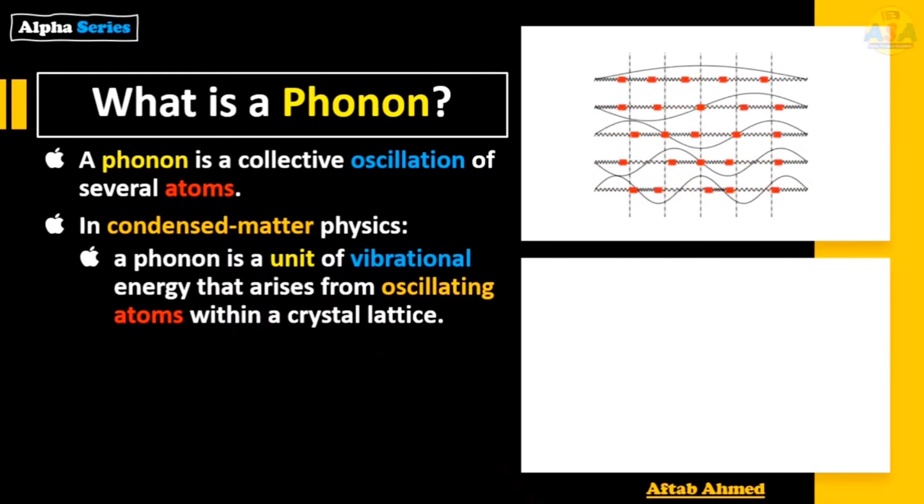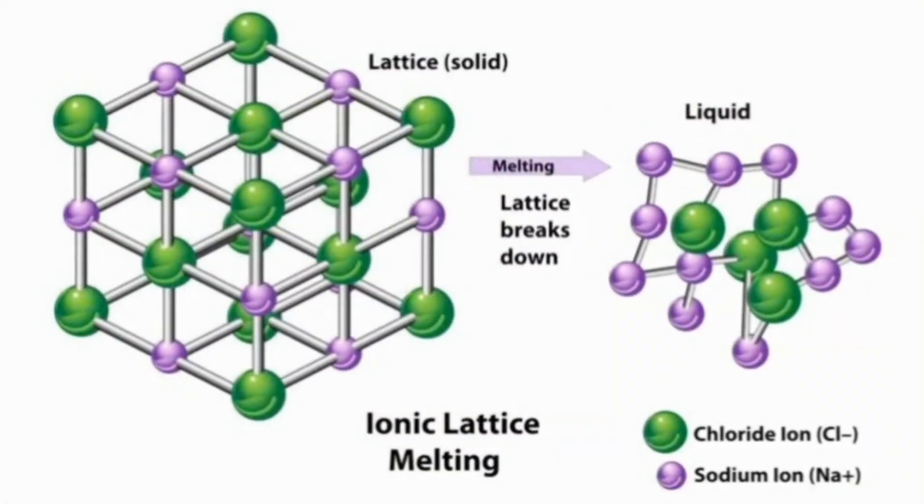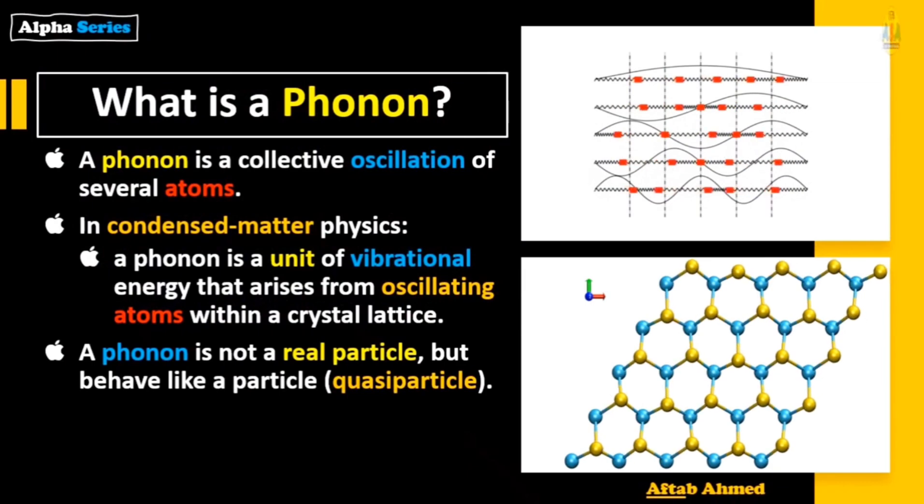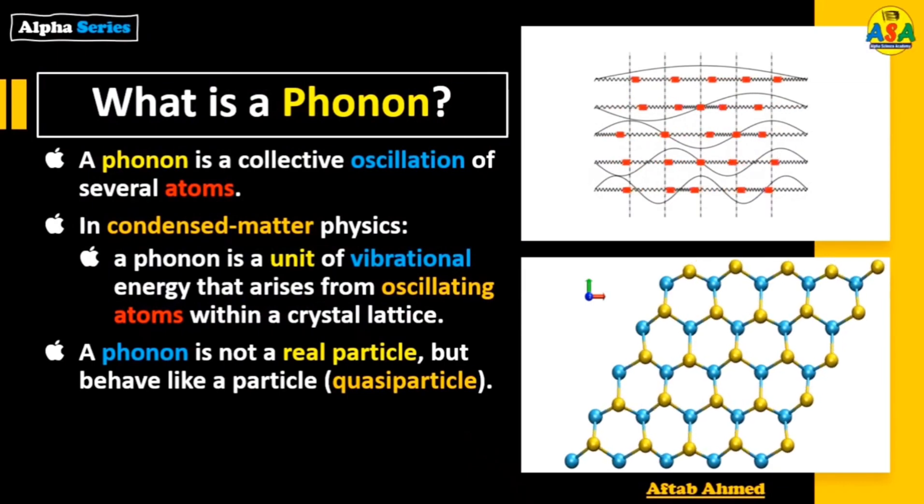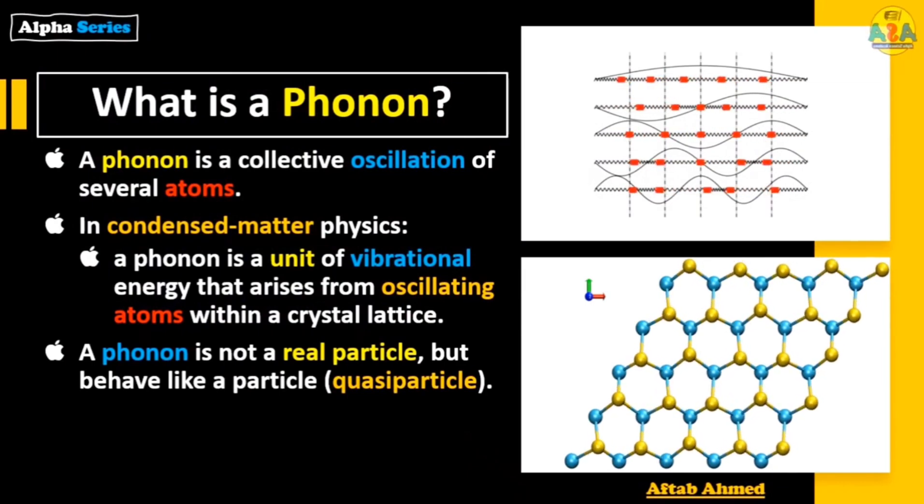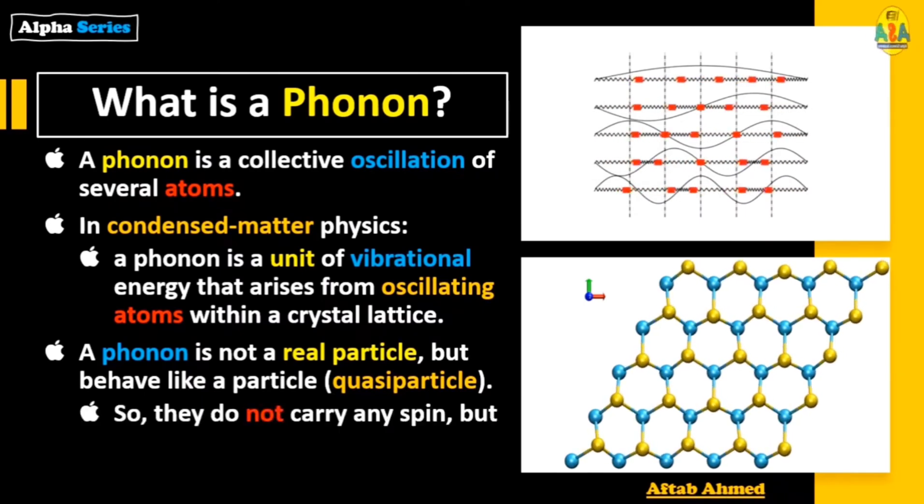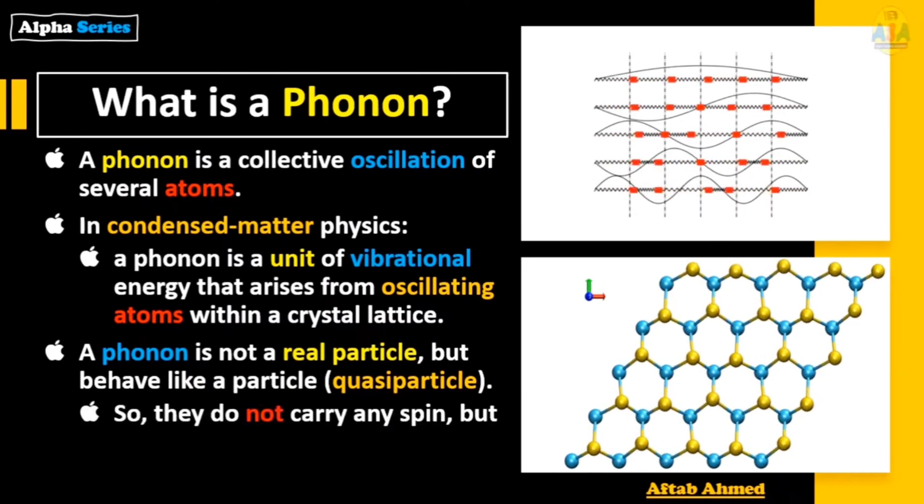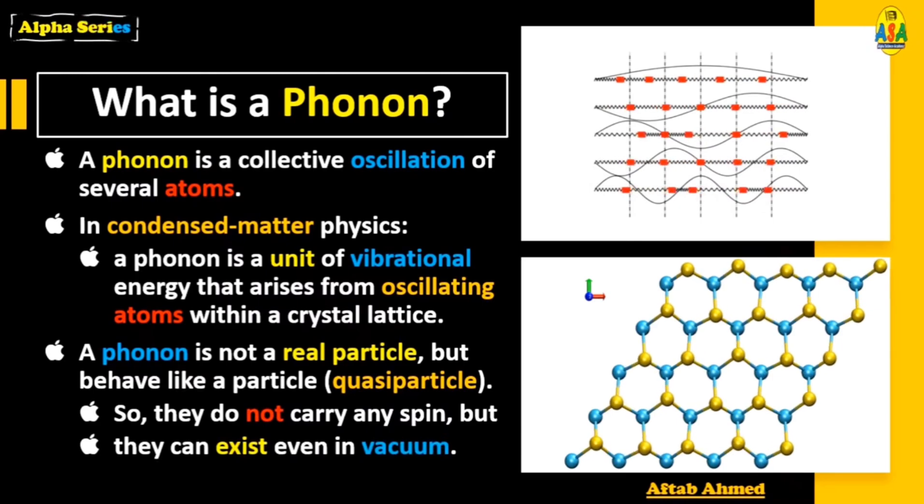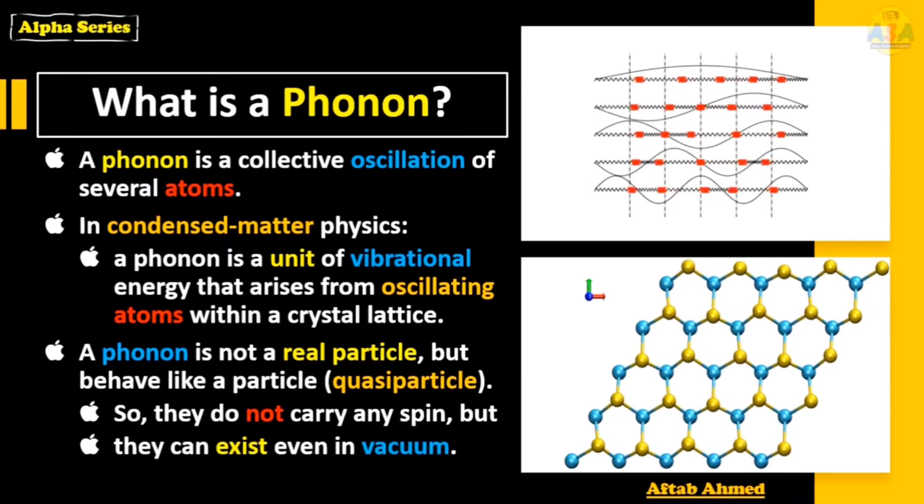What is a crystal lattice? It is a periodic three-dimensional regular arrangement of atoms. A phonon is not a real particle, just like electron, proton, or neutron, but it behaves like a particle. They do not carry any spin but they can exist even in vacuum.